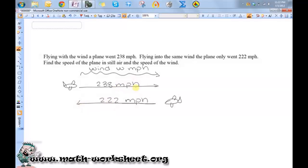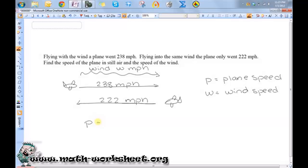The reason it goes faster when it goes with the wind is you take its regular speed and add the wind to it. So if we let P equal the plane speed and W equal the wind speed, then when it's going with the wind, we would say the speed of the plane plus the speed of the wind is equal to 238 miles per hour.